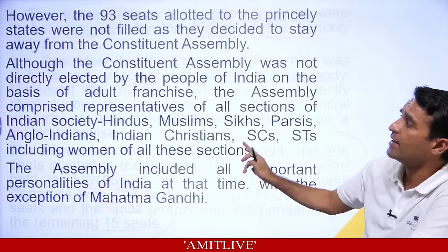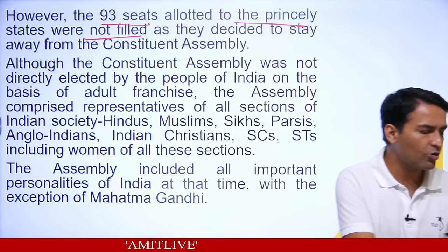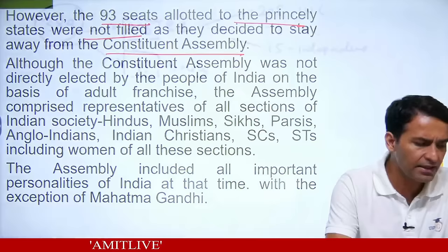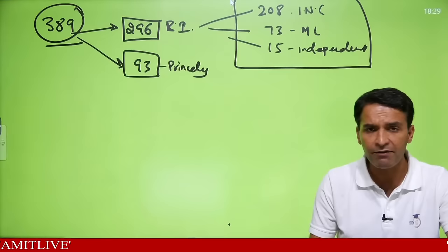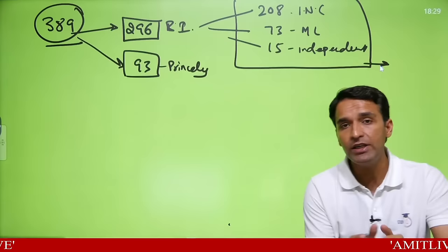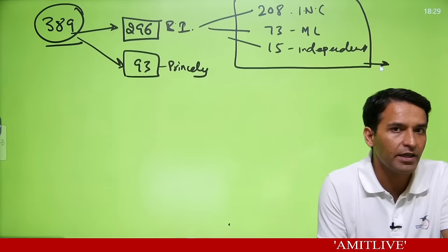Once these elections happened, differences arose again between Muslim League and Indian National Congress, and Muslim League decided to boycott. The 389 people had two purposes: first, to form the Constituent Assembly to make the constitution; second, to form an interim government, because making the constitution would take time.